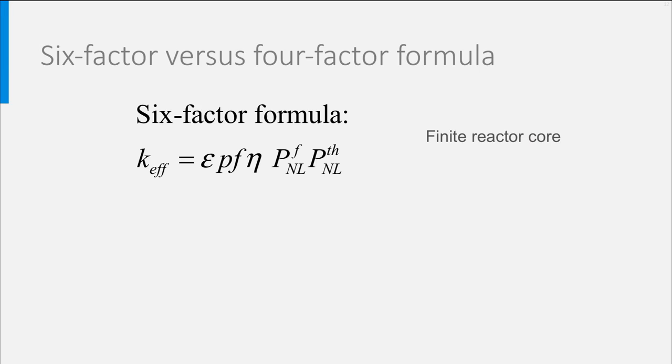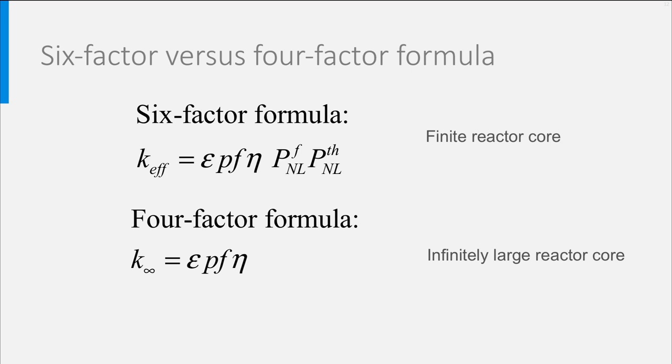If we would have an infinitely large reactor with no spatial leakage, the fast and thermal non-leakage probabilities would both be unity, and we would get the so-called four-factor formula, which gives an expression for the infinite multiplication factor.